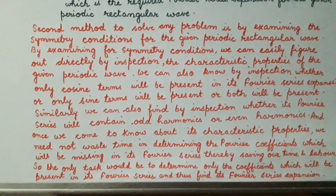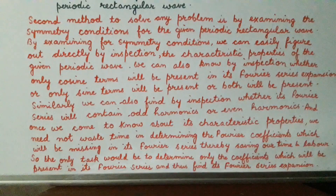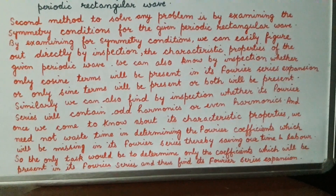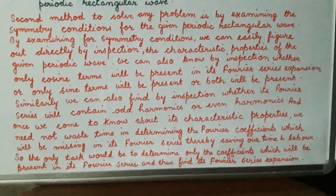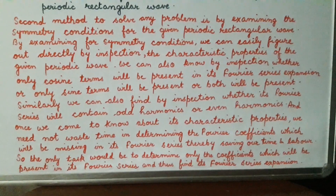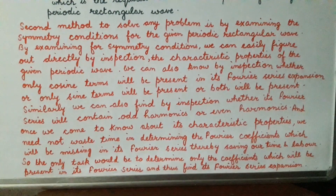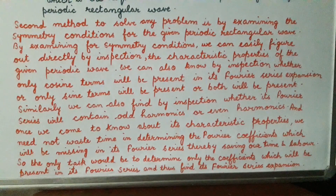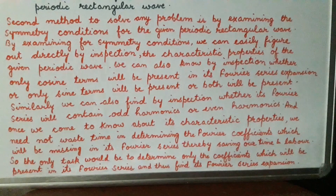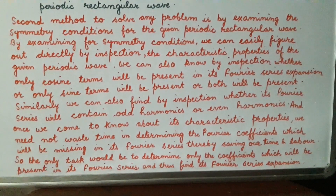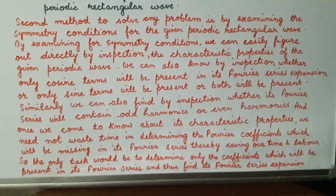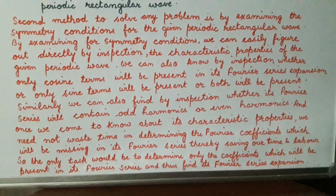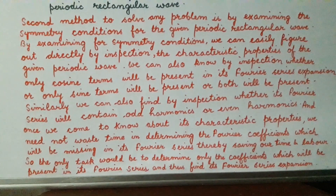We can also determine by inspection whether the Fourier series will contain cosine terms only, sine terms only, or both. Similarly, we can find by inspection whether the Fourier series will contain odd harmonics or even harmonics. Once we know the characteristic properties, we need not waste time determining the values of Fourier coefficients that are missing.